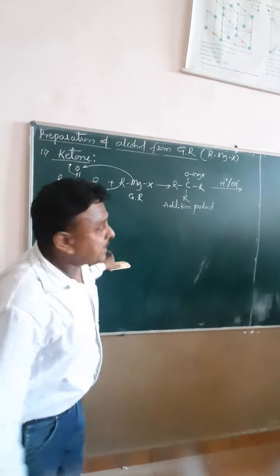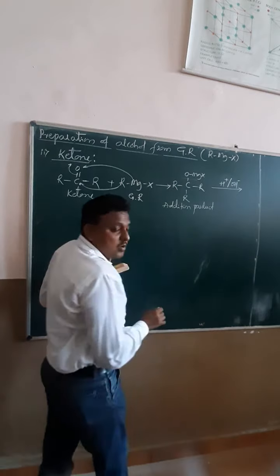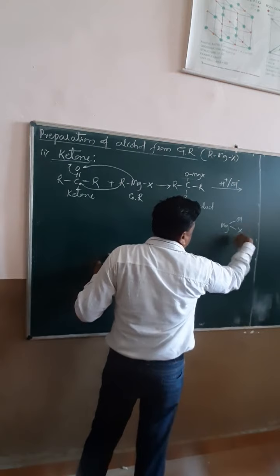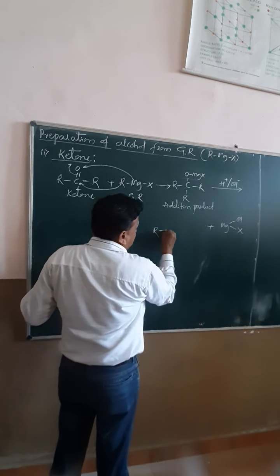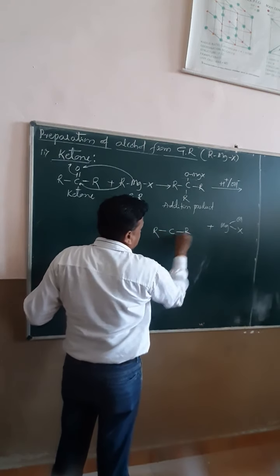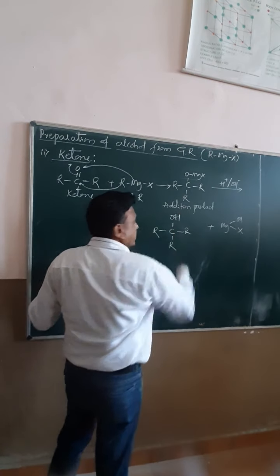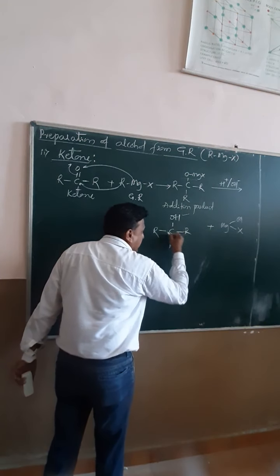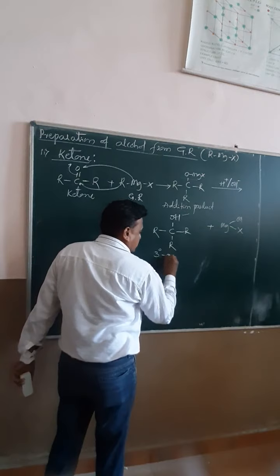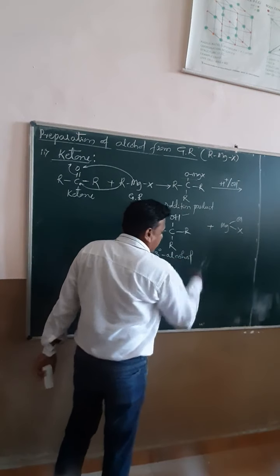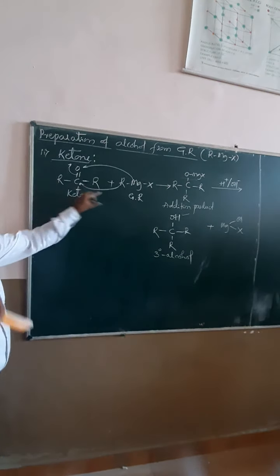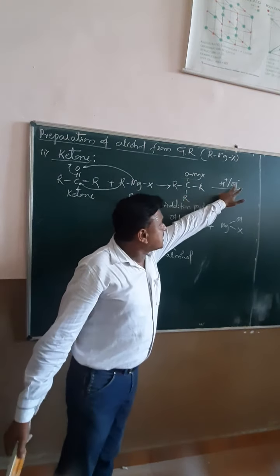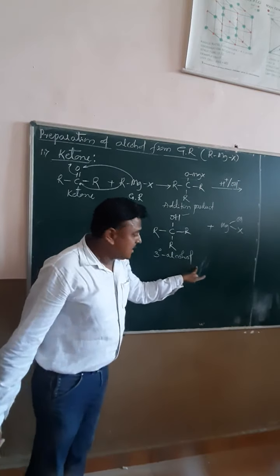It undergoes acid hydrolysis; the cleavage of the C-O bond occurs and MgOH·X is released. What remains is R-C(OH)-R with the attacking OH group. The O-H group is attached to a carbon that does not contain hydrogen — this is known as a tertiary alcohol. When ketone reacts with Grignard reagent to form an addition product, followed by acid hydrolysis, it forms a tertiary alcohol.